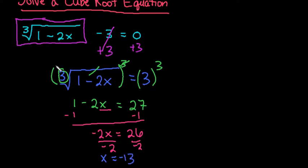For radicals, it's very important to always check your work. We're going to plug this back into our original equation. Take the cube root of 1 minus 2 times x, and replace x with what we found, negative 13, then subtract 3 equals 0.